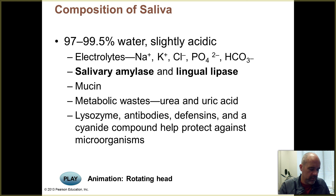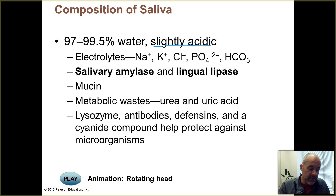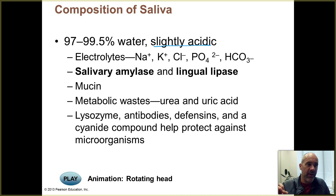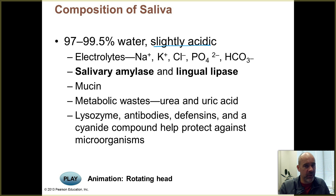What are the ingredients of saliva? Most of it is water — 97 to 99.5%. It's a little bit acidic, not at normal human body pH. That's actually important for helping to control the numbers of microorganisms in the mouth. Your mouth is full of microorganisms — they're supposed to be there — but the acidic conditions of the saliva help keep the populations under control. If you had saliva at a neutral pH, you would really have a ton of microbes in your mouth.